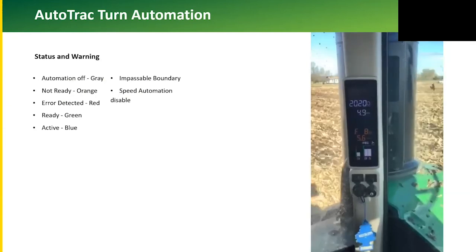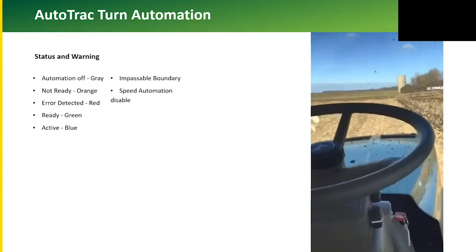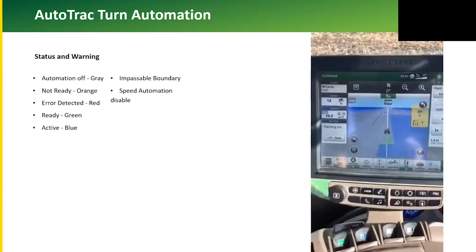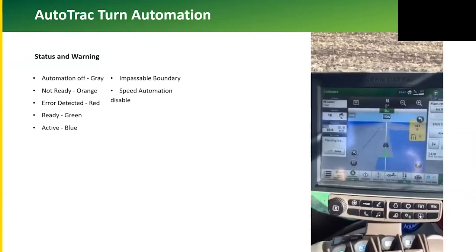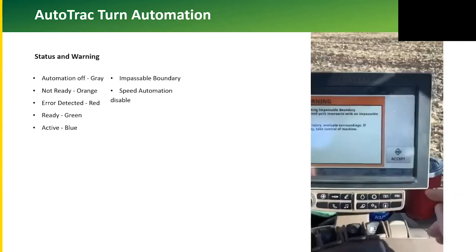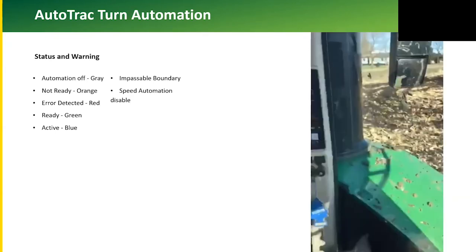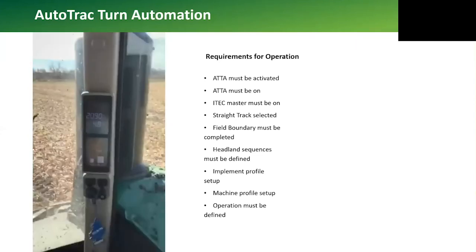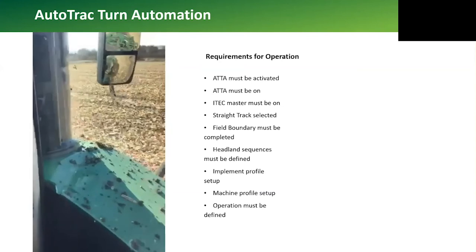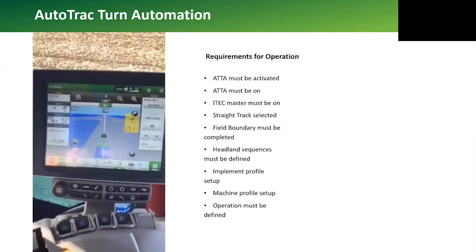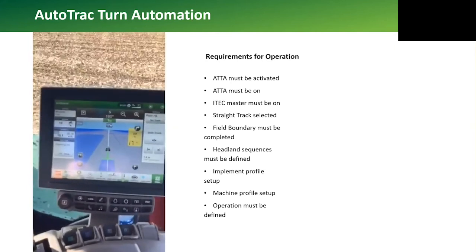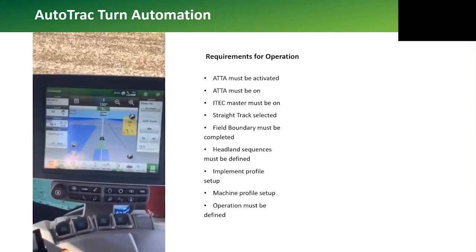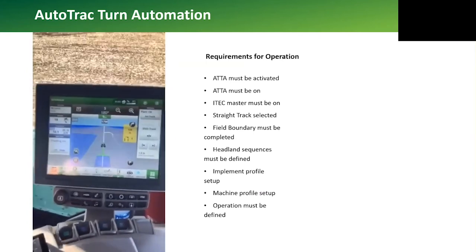The system does give a warning message if it's not going to be able to make the turn within the boundary. It will still make the turn even if it's going to be outside of the boundary, but it will alert you so you know if you have to manually steer. You can see the icon on the right hand side that turns yellow, then red, and then a full page warning message pops up indicating that it's going to be outside of the exterior boundary.